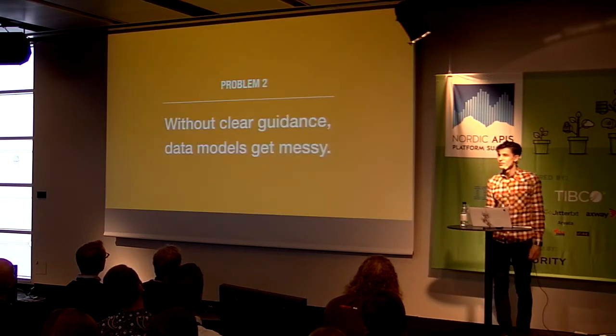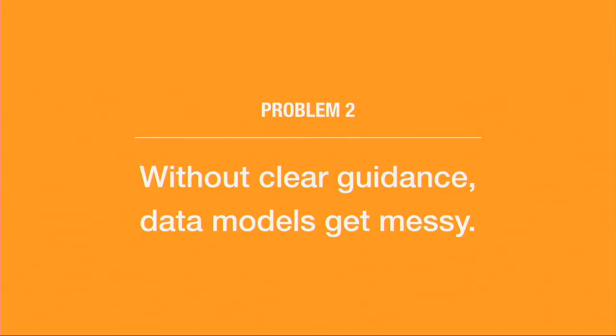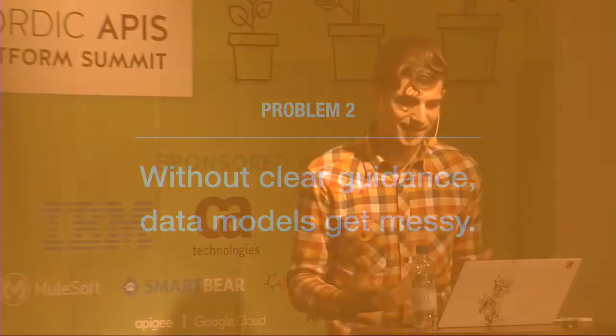The second problem was that without clear guidance, the data models got really messy. Because of the large amount of data available, the API started to resemble view models instead of well-defined normalized data models. Teams were regularly overloading existing endpoints, data was loosely related instead of well-scoped, and they wouldn't split data across another endpoint unless a new view was added. The experience evolved over time and what data was needed for each view changed, so the data just seemed arbitrarily split — there was no librarian keeping it organized.